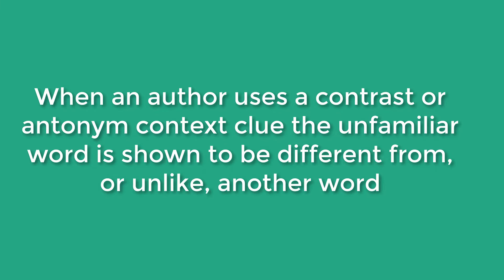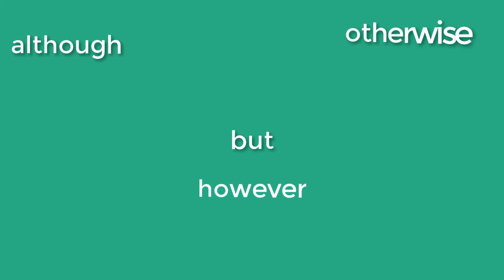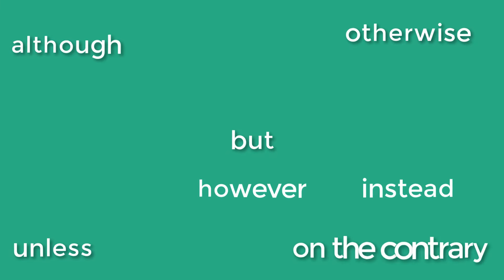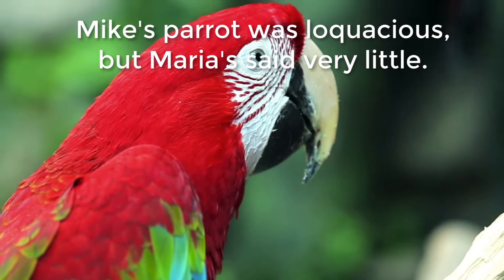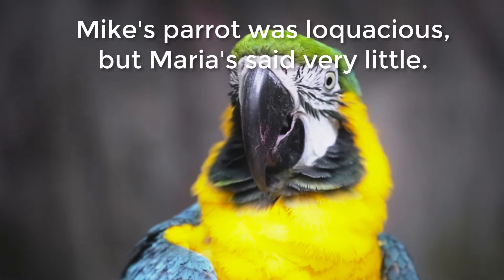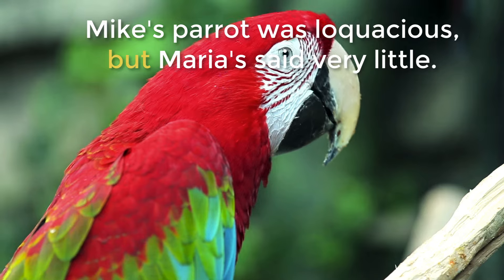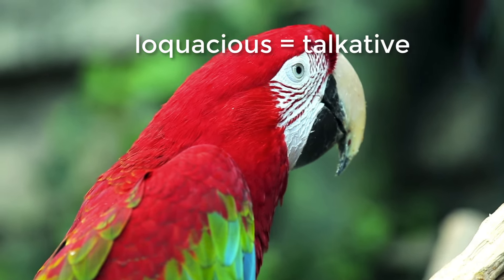The third context clue is contrast or antonym context clues. When an author uses contrast or antonym context clues, the unfamiliar word is shown to be different from or unlike another word, and is often an opposite. The words but, however, although, otherwise, unless, instead, on the contrary, on the other hand, while, never, no, or not may be used to signal the contrast. Let's look at this example: Mike's parrot was loquacious, but Maria's said very little. The word 'but' contrasts Mike's loquacious parrot to Maria's parrot who says very little — therefore, loquacious must mean talkative.